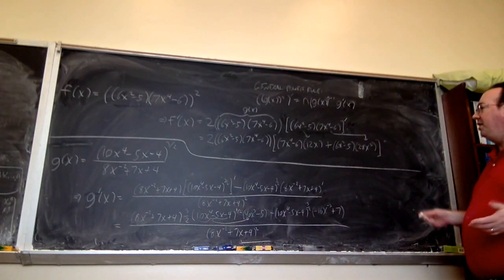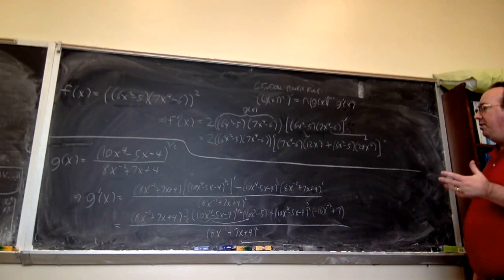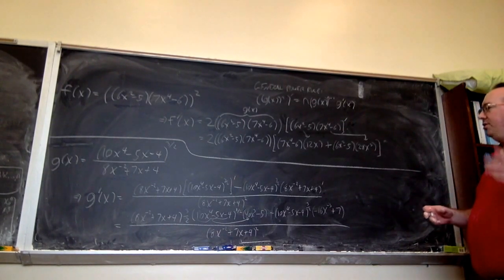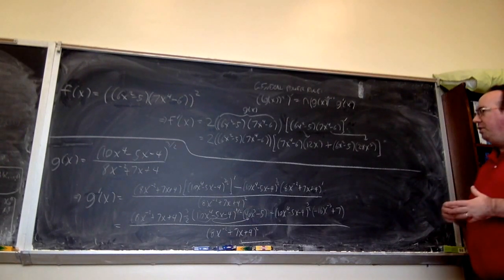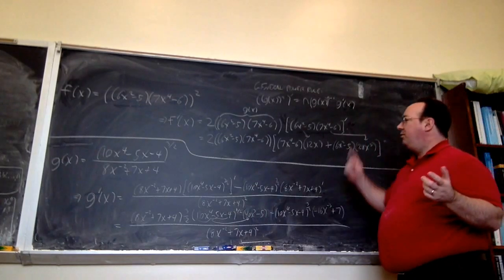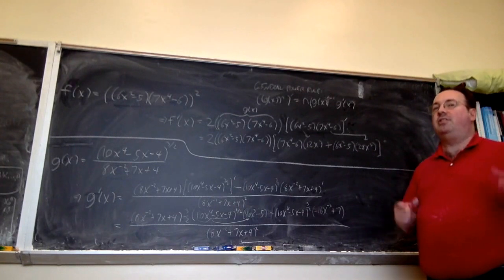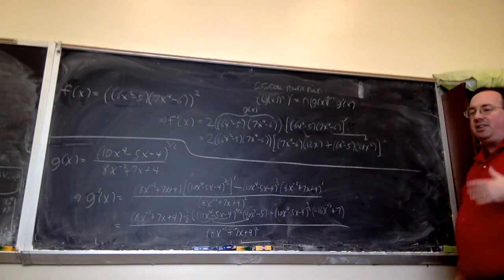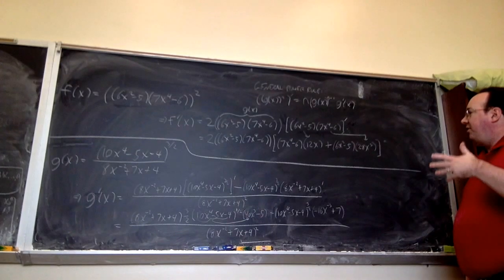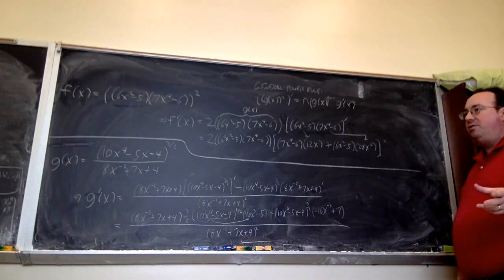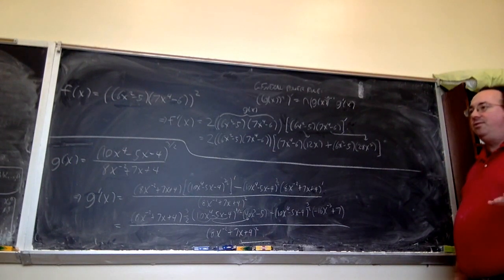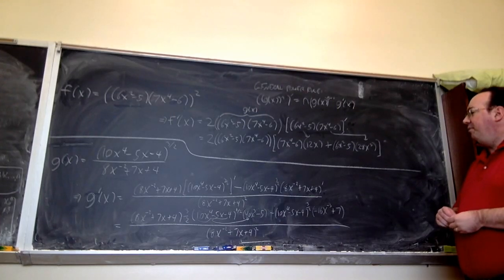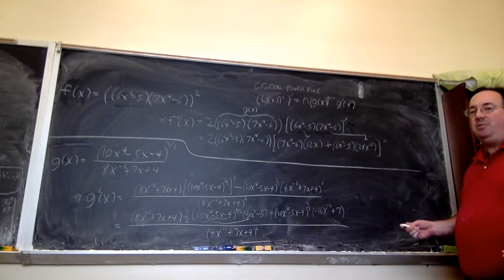There's no need to simplify here. It's important to understand how the function is built up. Is it a product? A quotient? A function raised to a power? In the latter case, use the general power rule first. If it's a quotient, use the quotient rule first. In the process of applying whichever rule you choose, you have to compute derivatives of portions of your original function — then ask yourself the same question again: what rule do I need here? As a result, you apply several rules in combination to produce these derivatives.